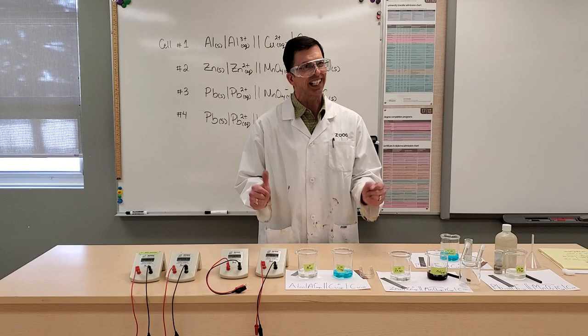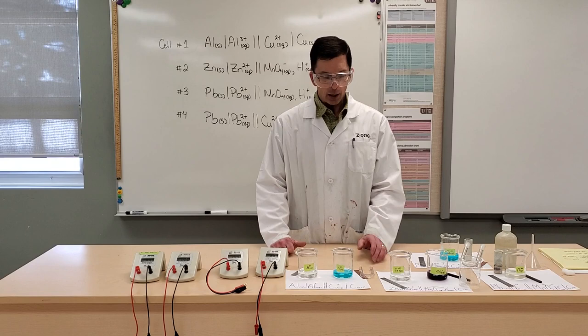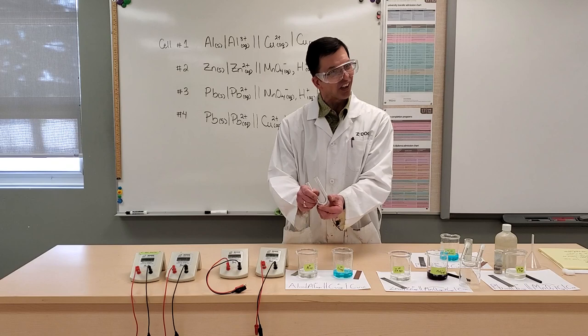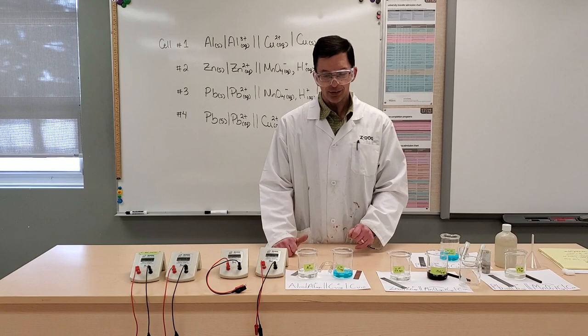And so our purpose today is to run through two different sets of voltaic cells having different constructions, one with what we call a U-tube, a salt bridge. When I was in grade 11, this is all we knew is U-tube. And we also have the porous cup construction.